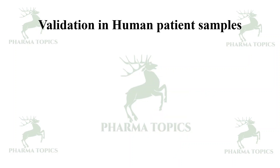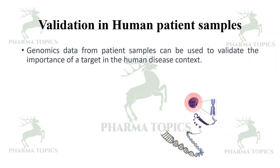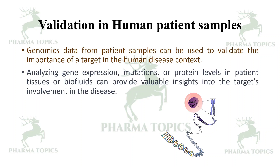Validation in human patient samples: genomics data from patient samples can be used to validate the importance of a target in a human disease context. Analyzing gene expression, mutations, or protein levels in patient tissues or biofluids can provide valuable insights into the target's involvement in the disease.